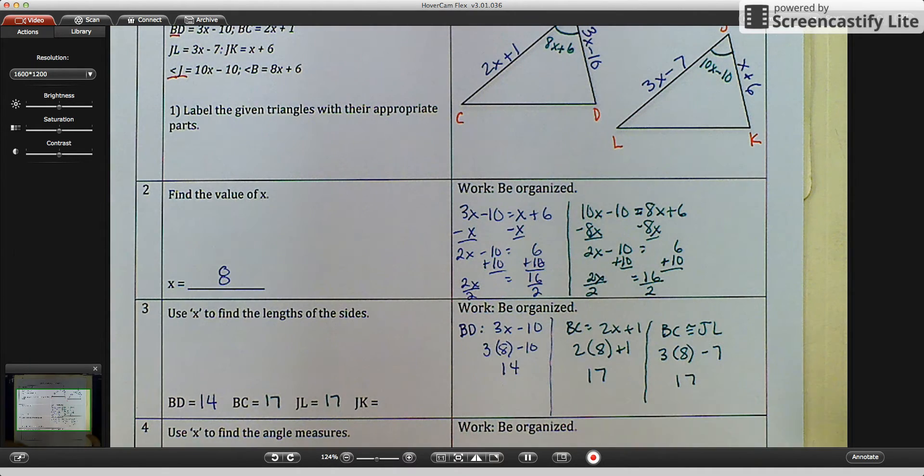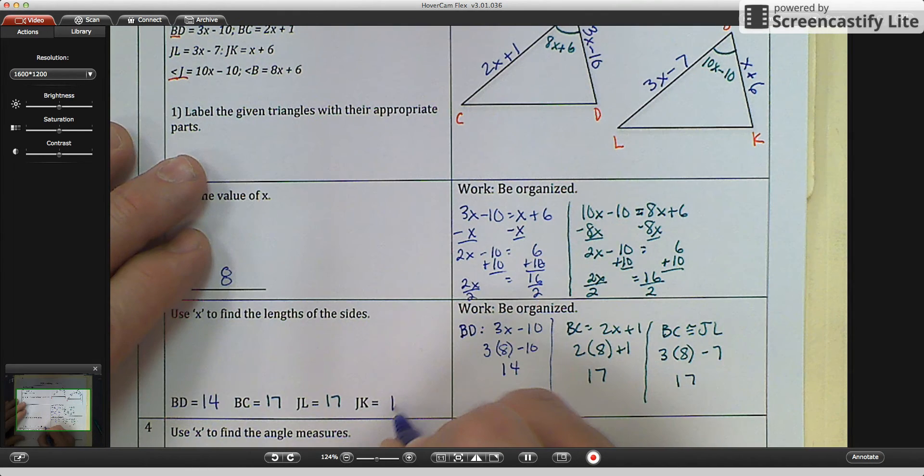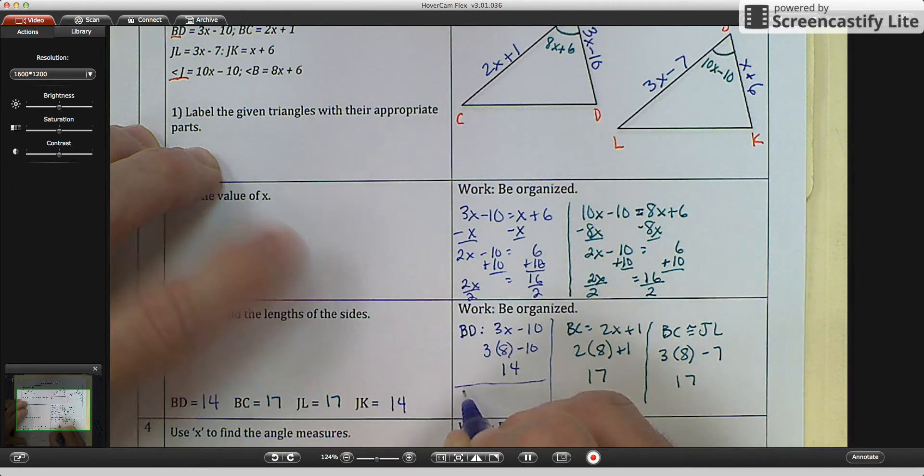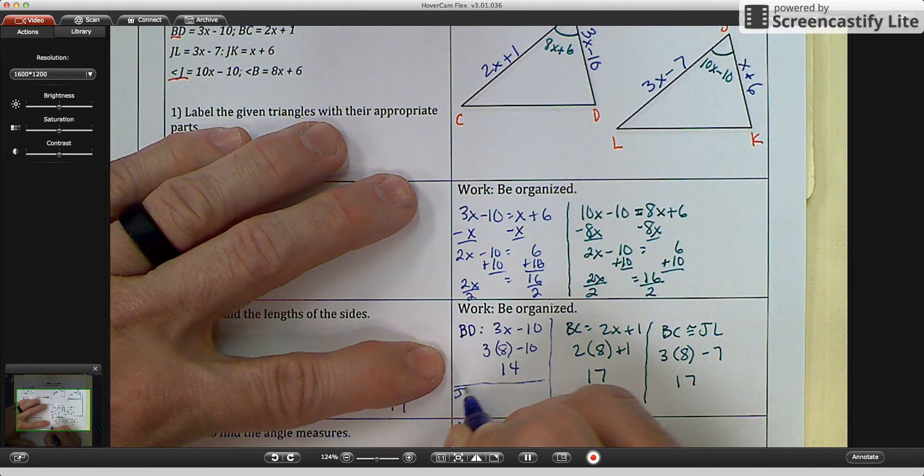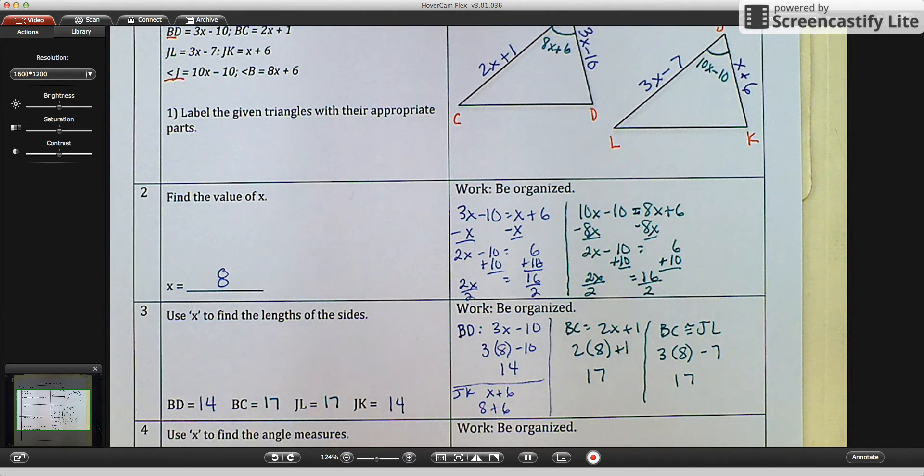And then JK, again, is congruent to BD. So that should be 14. Now I'm going to check it right here. JK is X plus 6. So 8 plus 6 is 14. And that's how you figure those out.